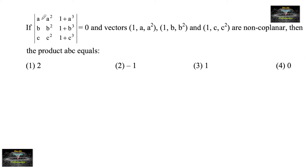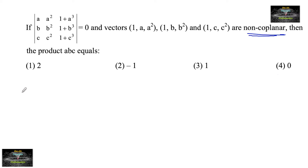If the determinant of the matrix with rows (a, a², 1+a³), (b, b², 1+b³), (c, c², 1+c³) is equal to 0, and the vectors (1, a, a²), (1, b, b²), (1, c, c²) are non-coplanar, then the product abc equals what? The answer is 2 — let's verify.